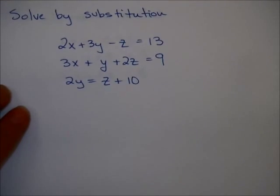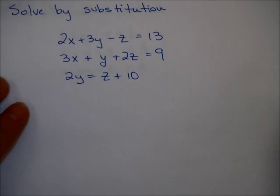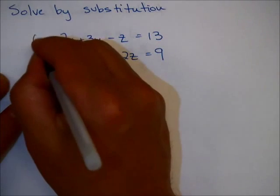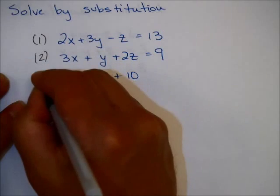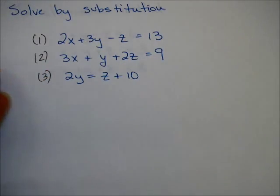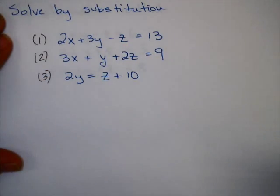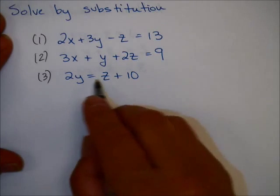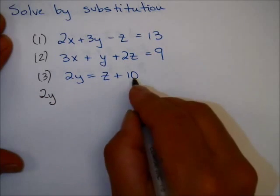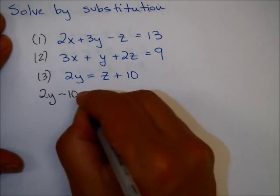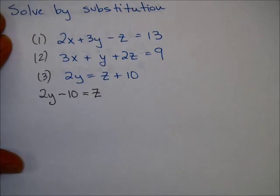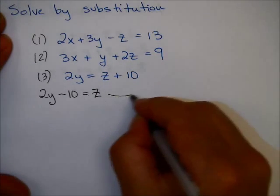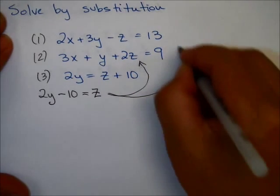Now let's look at another example by substitution. You might want to try this on your own, and then restart the video when you're ready. Again, I'm going to count this as equation 1, 2, and 3. I'm going to take one of these equations and solve for one of the variables. I'm going to take the bottom equation and solve for z — that seems pretty easy. Subtracting 10 from each side, I get z equals 2y minus 10. Now I'm going to substitute this into equation 1 and equation 2.